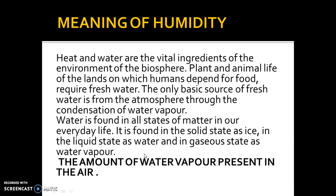Humidity also varies from time to time. During summer, as the temperature is high, the evaporation rate is also high. If the evaporation rate is more, then precipitation is also high. So in short, during summer humidity level is high, and during winter humidity level is less. By these two examples — equatorial versus other regions, and summer versus winter — we can justify how humidity varies from place to place and time to time.